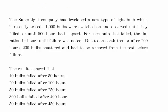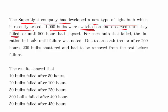In this presentation we are going to look at survival analysis again. The Superlight company makes light bulbs and has developed a new type which was recently tested. 1000 light bulbs were switched on and observed until they failed or until 500 hours had elapsed. So the entire duration of this experiment is 500 hours. If bulbs last longer than 500 hours, we have right censoring.